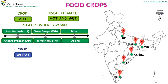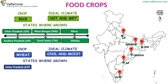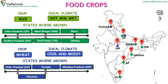Wheat: ideal climate for wheat is cool and moist. States where wheat is grown are Uttar Pradesh, Punjab, Madhya Pradesh, Haryana and Rajasthan.